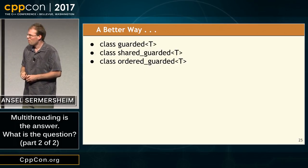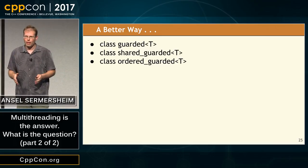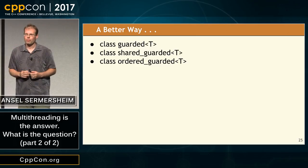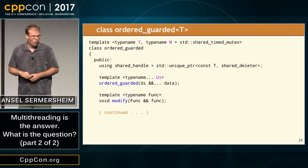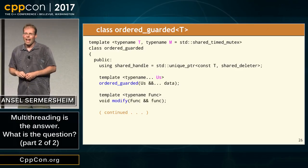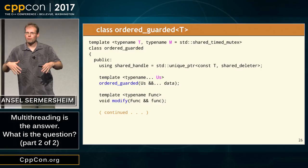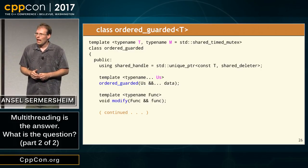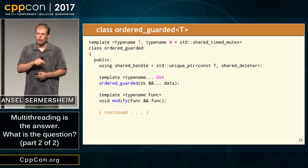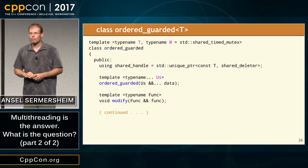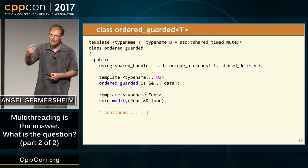We can generalize this further. What if we're thinking in a very functional way? Instead of imperative programming where we get access to a piece of data and do stuff with it, we just want to say: this is the operation we'd like to do to mutate this data. We now have a way to phrase that — this is a class called ordered_guarded. Instead of having a lock method, ordered_guarded has a modify method where you pass in a functor. The functor receives the shared data with it already locked, does the work, and returns. If I know the functor terminates, I know that lock will not be held indefinitely.